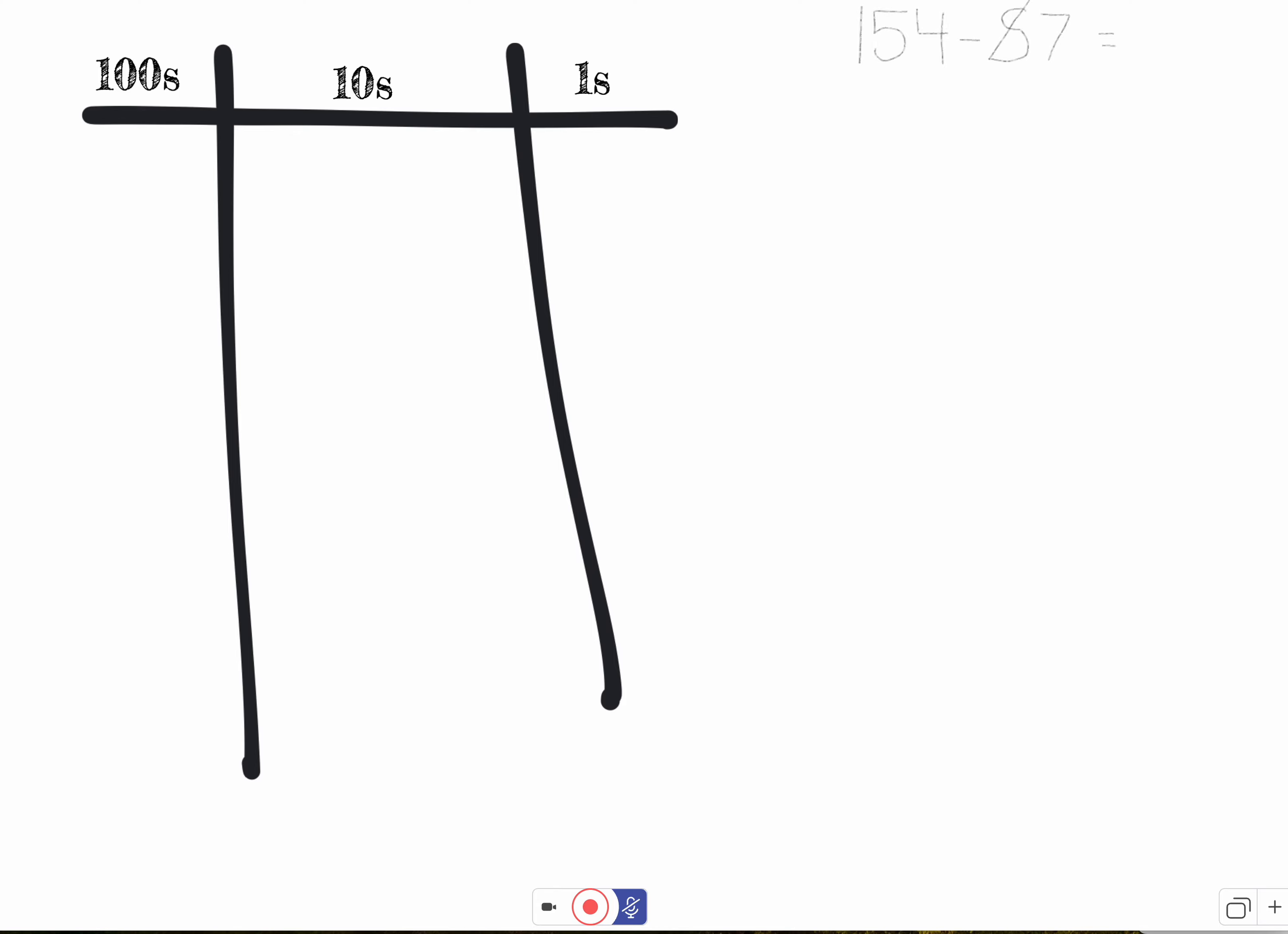We're going to use a place value drawing to help us rename 154 so we can subtract. So 154: 150, 10, 20, 30, 40, 50. Now I know I only drew five dots, but that's because each dot represents 1 ten. That's why I labeled my place value chart tens, and then four ones: one, two, three, four.